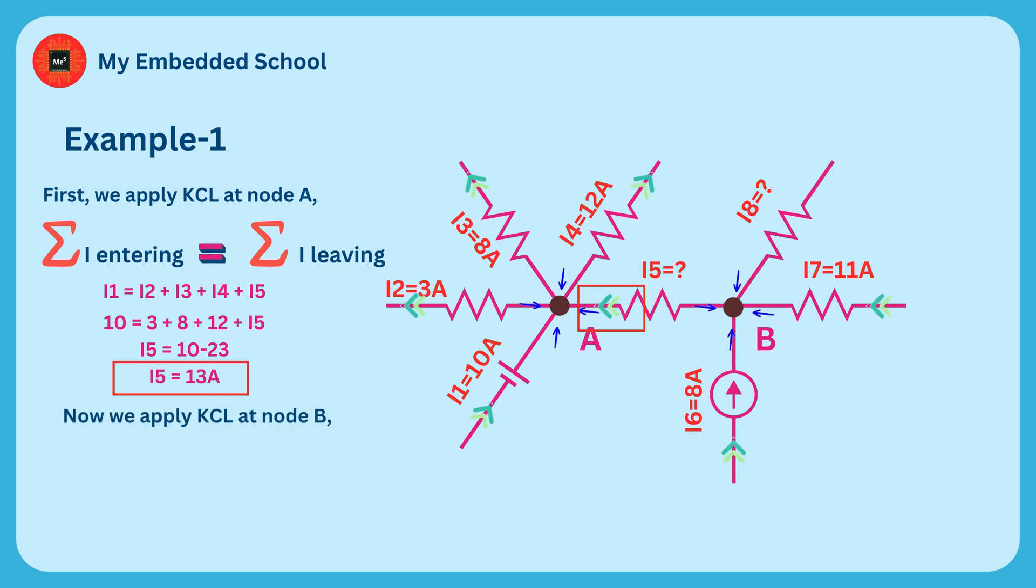Now we apply KCL at Node B. We don't know the direction of the current I8, so we assume the direction of the current I8 is leaving the node. So we can write the equation this way: I8 plus I5 equals I6 plus I7. We get the result from this equation: I8 equals 6 amperes. The value of I8 is positive, which means direction is right what we assumed.